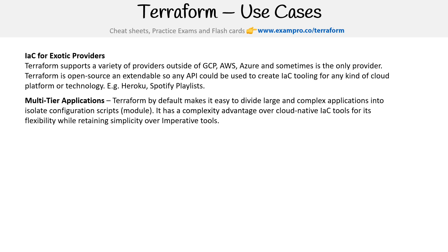For multi-tier applications, Terraform by default makes it easy to divide large and complex applications into isolated configuration script modules. When you have a bunch of Terraform files, they're all treated as one, which makes it really easy to split up your projects or your infrastructure. It has a complexity advantage over cloud-native IaC tools for its flexibility while retaining simplicity over imperative tools.